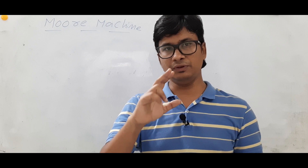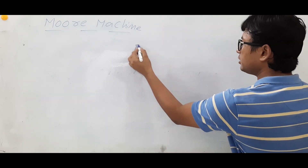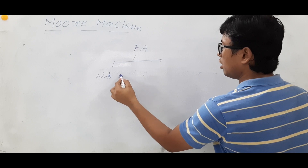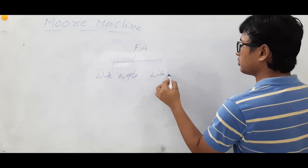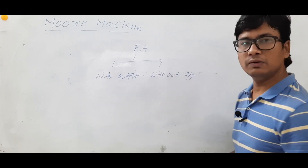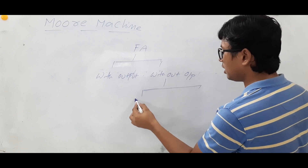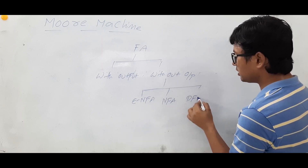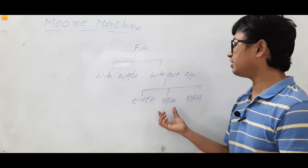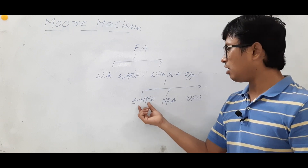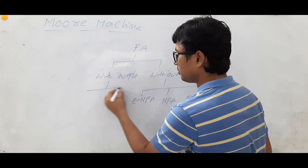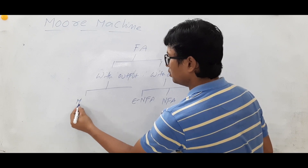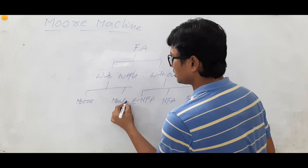We have already discussed that finite automata is of two types: with output and without output. Without output includes epsilon NFA, NFA, and DFA, and we said that the power of epsilon NFA, NFA, and DFA are equal — the capability of all three machines is the same. Now in the coming videos we will discuss about finite automata with output, so we have Moore machines and Mealy machines.